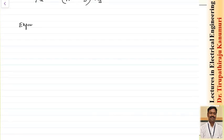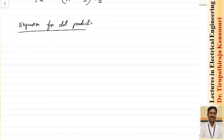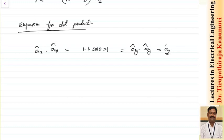Let us now define the expression for dot product. If you multiply unit vector x with unit vector x itself, the angle between them is 0, so this equals 1 times 1 times cos 0 = 1. The same applies for unit vector y dot y, and unit vector z dot z — all cases give 1. Whenever the angle between vectors is 0, the dot product gives the product of their magnitudes.